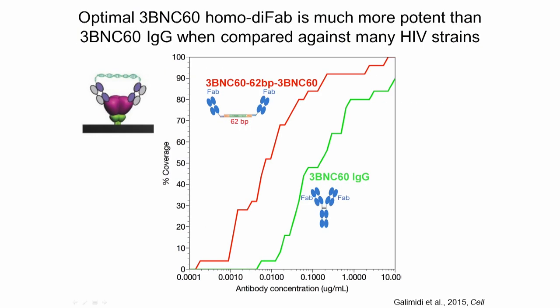When we look across a collection of viral strains using the best homo-difab — the one with 62 base pairs linking the 3BNC60s — it's better in every single strain compared to the parent IgG. Interestingly, both the parent IgG and the homo-difab have two Fabs, but this one has the Fabs separated by what we think is the ideal distance to do intraspike cross-linking, and that makes all the difference.